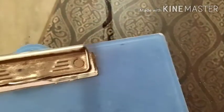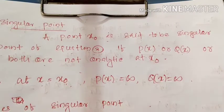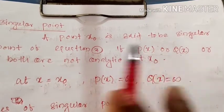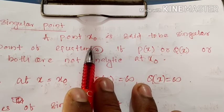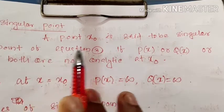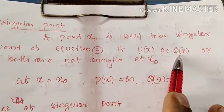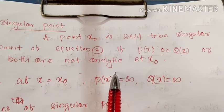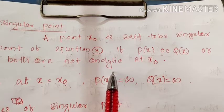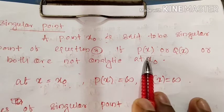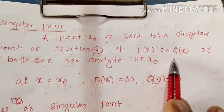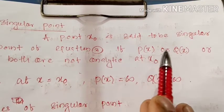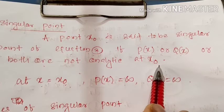The next definition is the singular point. A point x₀ is said to be a singular point if p(x) and q(x) are not analytic at x₀, meaning the values of p(x) and q(x) are infinite at x = x₀.